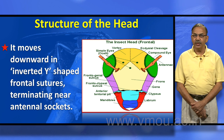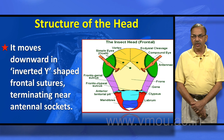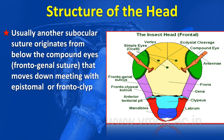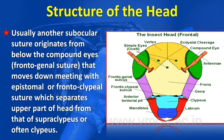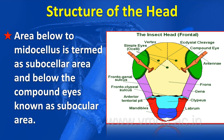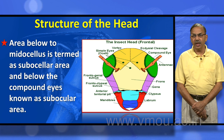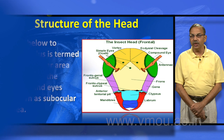The adfrontal line moves downward in inverted Y-shaped frontal sutures, terminating near or joining with the antennal sockets. Another subocular or frontogenal suture originates from below the compound eyes, moving down and meeting with the epistomal or frontoclipeal sutures, which separate the upper part of the head from the supreclipeus or clypeus. The area below the median ocellus is termed the subocellar area, and below the compound eyes is known as the subocular area.